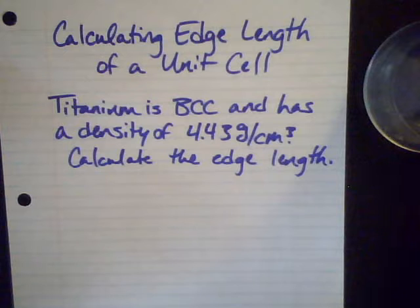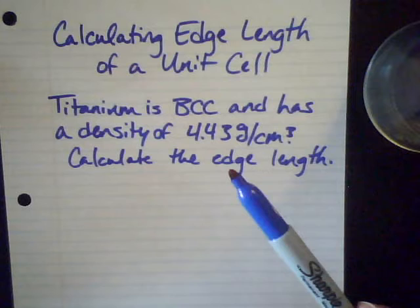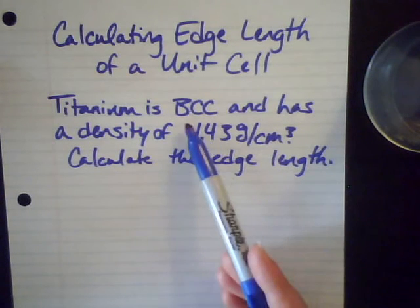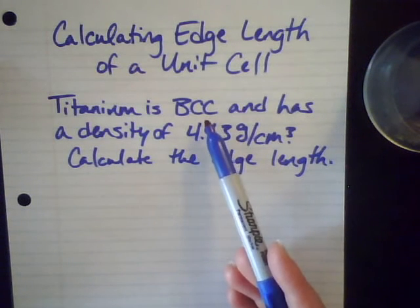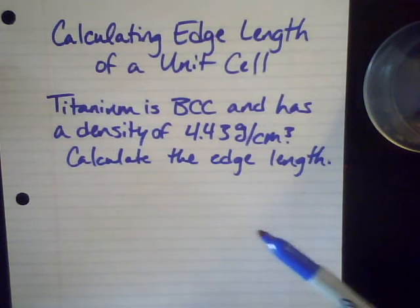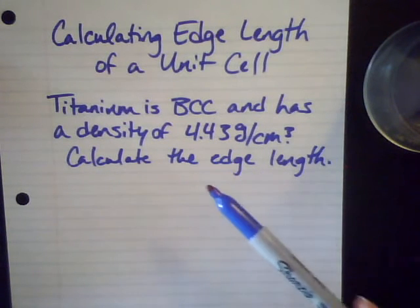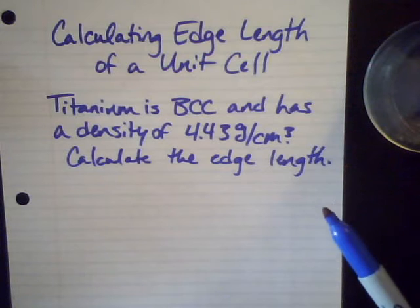So now we're going to talk about going backwards. If you know specific information about the unit cell, for instance, maybe that it is body centered cubic, remember BCC from our lab, and something about the density of it, then maybe we can go back and calculate the edge length.